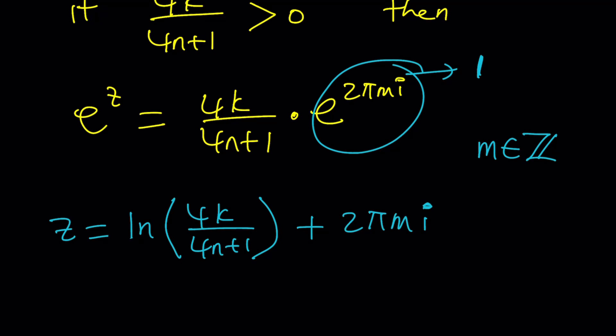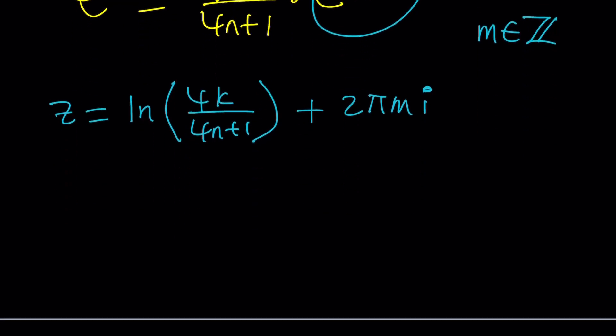Three integers, so a lot of parameters, but that should be the general solution. And guess what? This is the interesting part. Again, k does not equal 0.